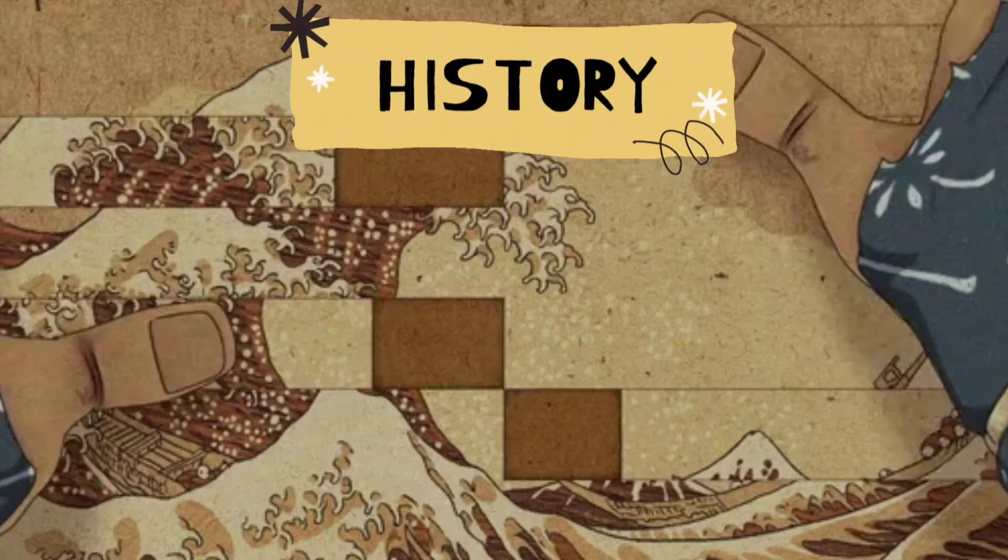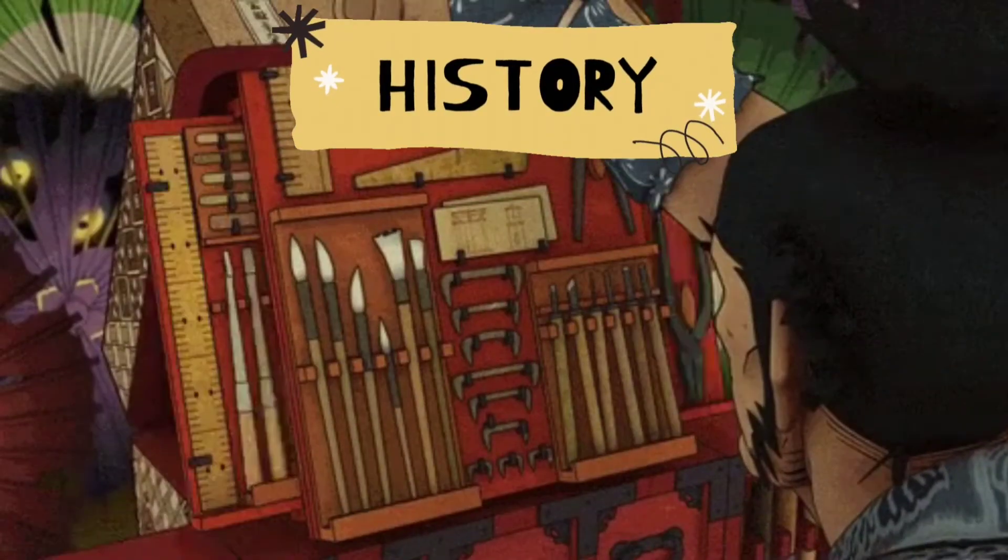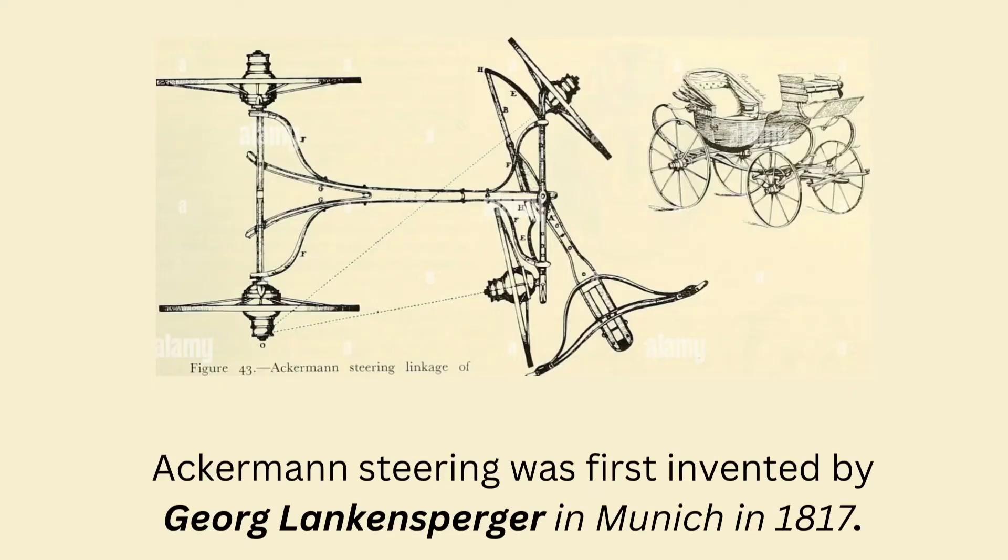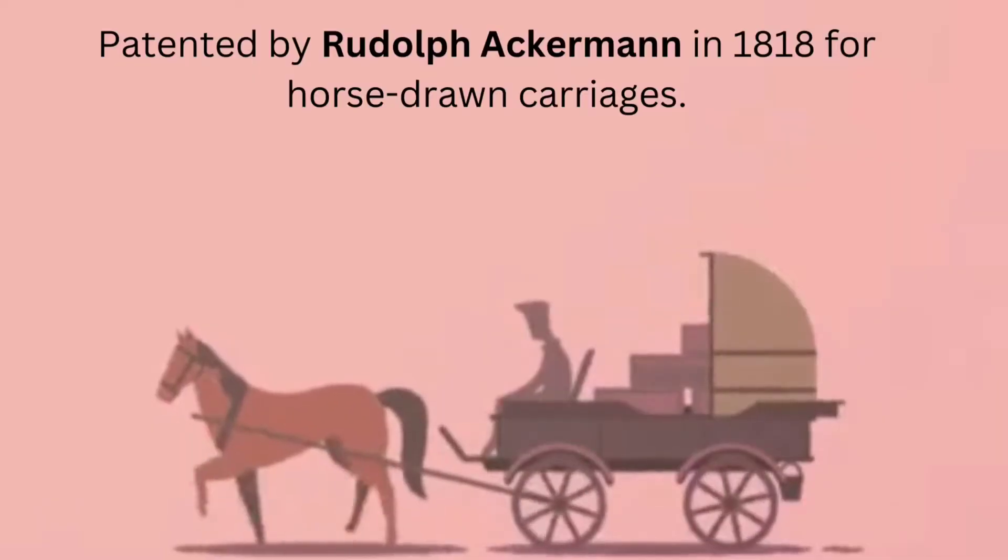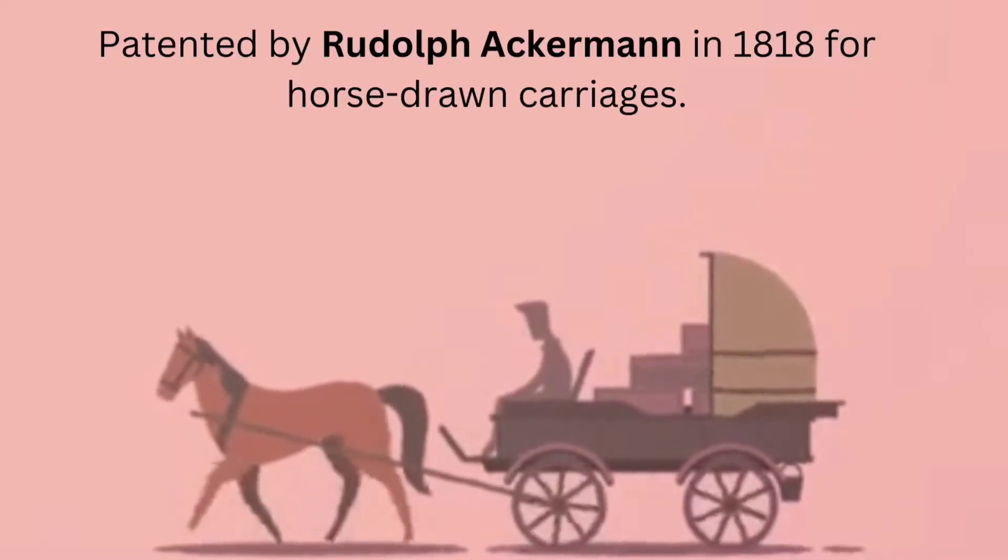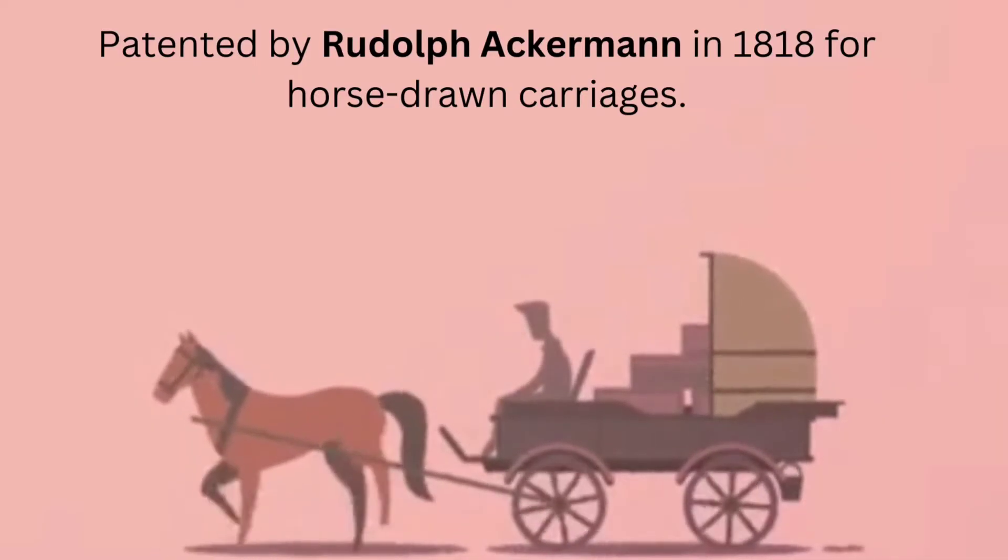Let's see the history behind the Ackermann steering mechanism. Ackermann steering was first invented by Georg Lankensperger in Munich in 1817. It was then patented by Rudolf Ackermann in 1818 for horse-drawn carriages.